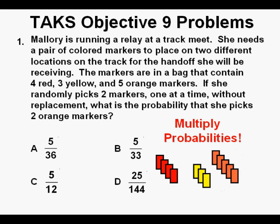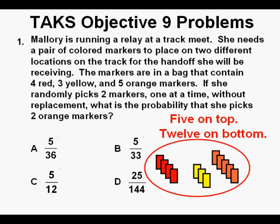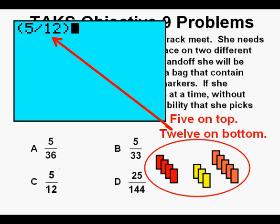When combining probabilities of separate or independent events, the probabilities must be multiplied. For the first pick, what is the probability of picking an orange marker on the first try? It's five in the numerator on top since there are five orange markers, and 12 in the denominator for the total number of markers. We place 5 divided by 12 in the calculator.